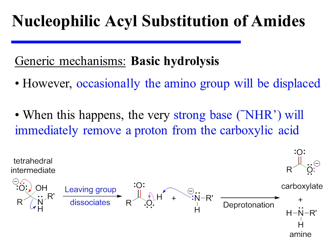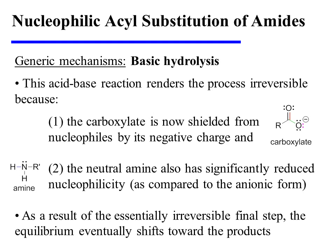However, occasionally, when the tetrahedral intermediate collapses, the amino group will be displaced instead. And when this happens, the very strong base that is released — the nitrogen anion — will immediately remove a proton from the carboxylic acid. And this deprotonation renders the reaction irreversible. This final acid-base reaction rendered the process irreversible for two reasons: one is that the carboxylate is now shielded from nucleophiles by its negative charge, and the other reason is that the neutral amine has significantly reduced nucleophilicity as compared to its anionic form. As a result of the essentially irreversible final step, the equilibrium is eventually shifted toward the products.